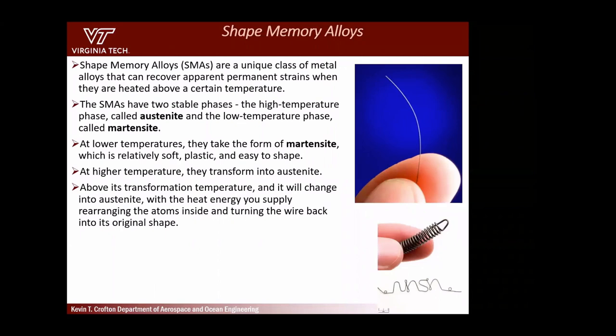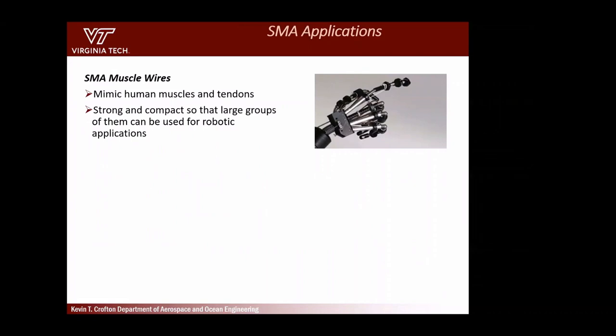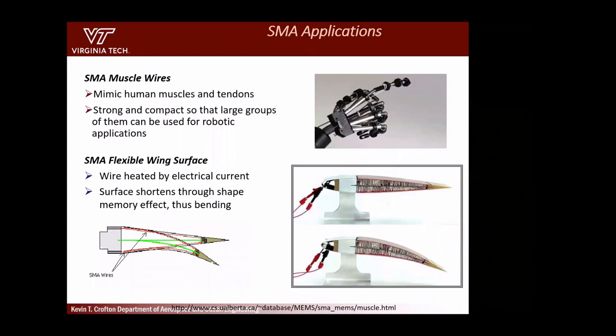Another smart material is shape memory alloys. The idea is that you have a metal that when you heat it up will change shape — it will contract. You can use these as muscle wires, which is what they're often called. People have used these in robotics. We have a little butterfly here that uses an SMA wire. We can also use these for morphing — attach them to a structure and bend the structure using these muscle wires.